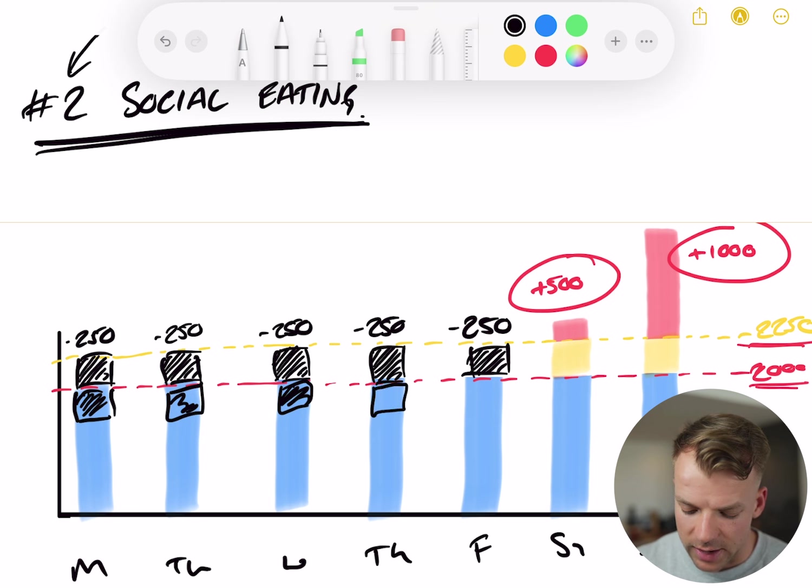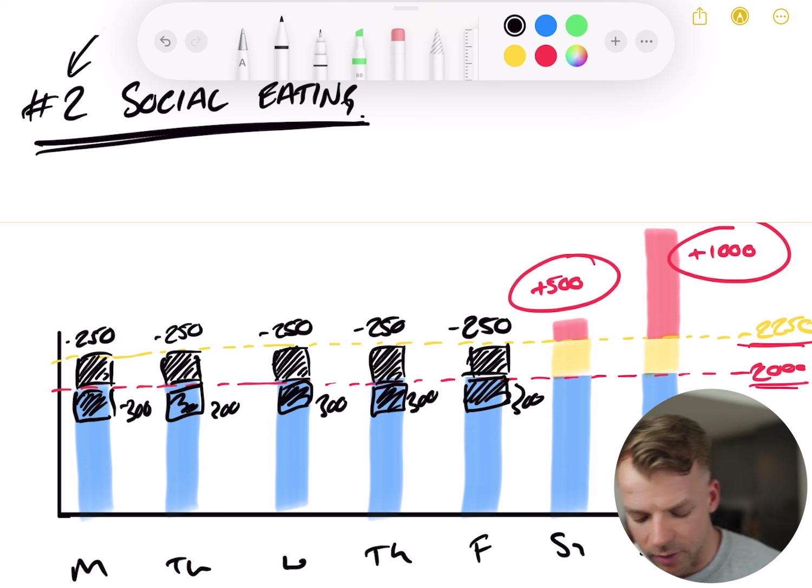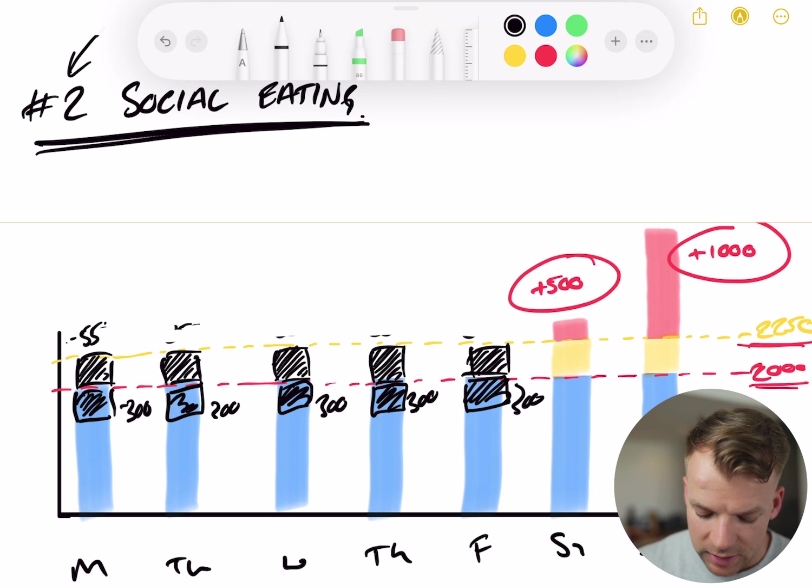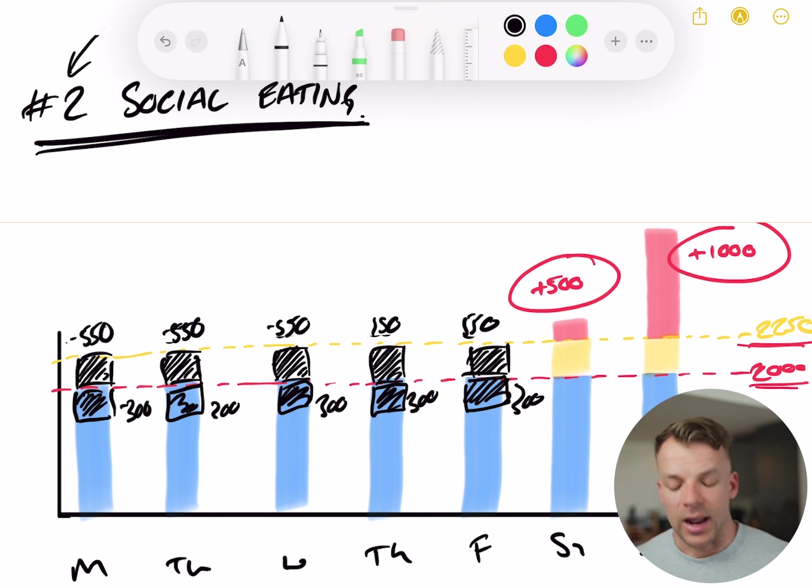So we're going to add on the 300 on top of that which creates a new 550 calorie deficit. So if I just go back to the week here, you've got normal deficit all the way through Monday, Tuesday, Wednesday, Thursday, Friday, and then this extra square that I'm adding is minus 300, 300, 300, 300, and 300 again. All in all, that means that the total that we've now actually subtracted from each day is a total of 550 calories every single day.